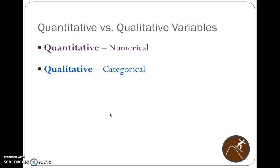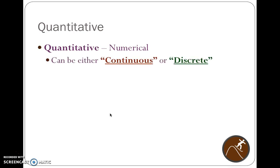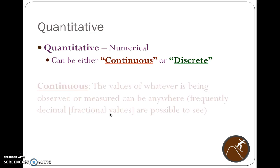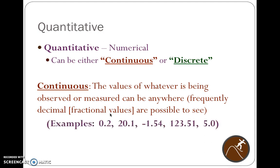Quantitative data is numerical — there are numbers — and these numbers can be continuous or discrete. Continuous data are data where the values of whatever you're measuring can essentially be anything: whole numbers, decimals — all are possible. Examples include values like 0.2, 20.1, negative 1.54, 123.51, and 5.0.